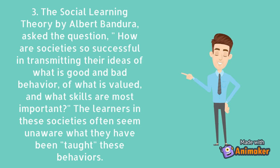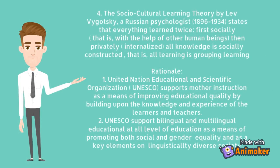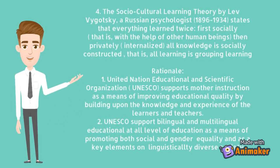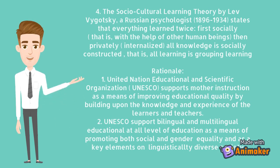The Social Learning Theory by Albert Bandura asked the question: how are societies so successful in transmitting their ideas of what is good and bad behavior? The Social Learning Theory by Lev Vygotsky, a Russian psychologist, states that everything is learned twice — first socially, and secondly individually — and that all knowledge is socially constructed.